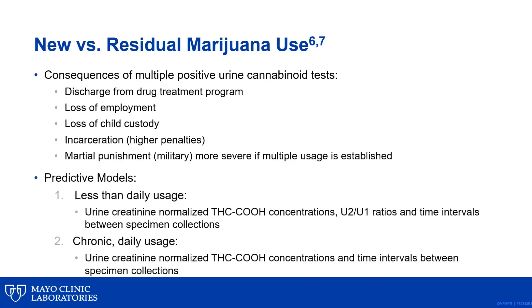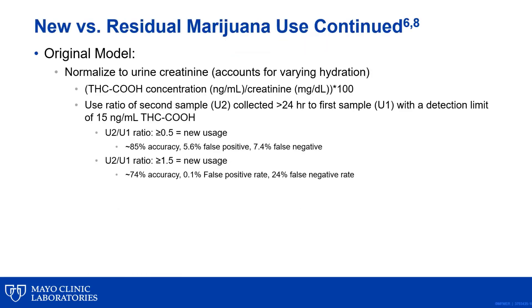As a result, several studies and predictive models have been published. In these models, investigators recommend using urine creatinine normalized carboxytetrahydrocannabinol concentrations at two time points and calculating a decision ratio from these values. In the original model, you normalize the carboxy THC concentration to the creatinine concentration of the urine to first account for any varying hydration status. You then collect a second urine at least a day or more later and again normalize the carboxy THC concentration to the creatinine. Next, you take the second normalized carboxy THC and divide it by the first normalized carboxy THC to get a decision ratio.